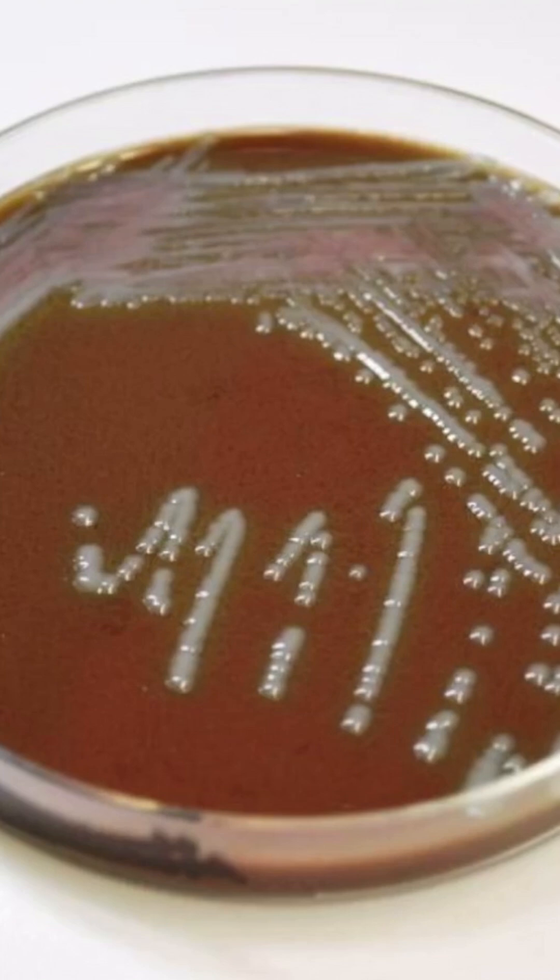The red blood cells are an important part of the agar because compounds called factor V and factor X are normally inside of the red blood cells. Therefore, these compounds are only available to the organisms when the medium is heated and the red blood cells are lysed. So remember, H. flu can grow on chocolate agar because red blood cells are lysed, which supply the agar with factor V and factor X.